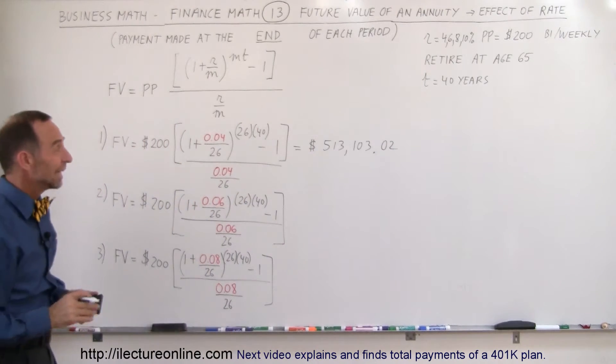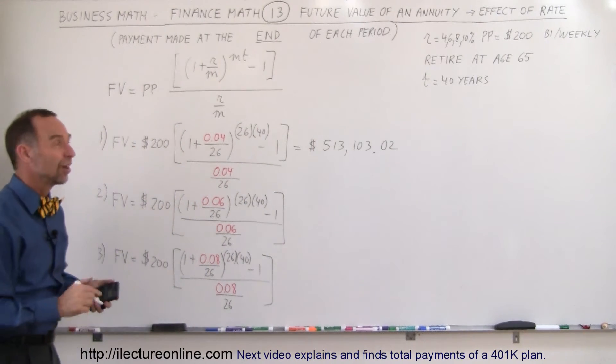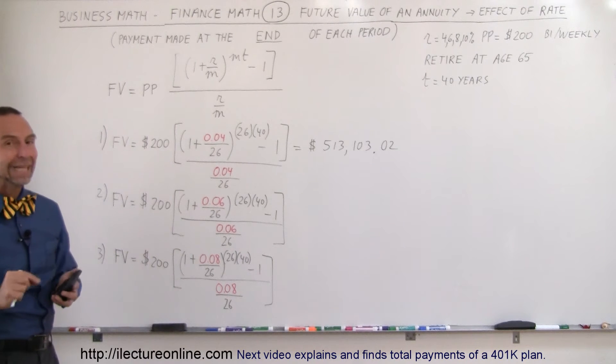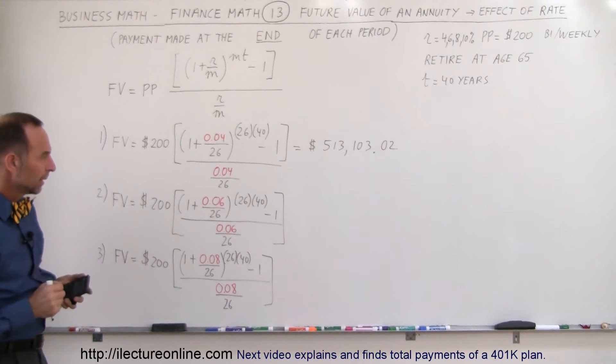So a half a million dollars in the bank after 40 years. All you have to do is put $200 in the bank every two weeks.